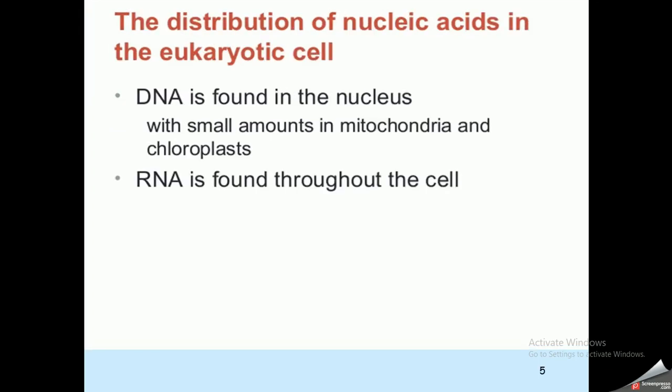Usually nucleic acids are distributed in the eukaryotic cell mostly in the nucleus, with small amounts in the mitochondria. Most DNA is found in the nucleus, with some small amounts of nucleic acid in mitochondria. RNA is found everywhere—it can be in the nucleus or in the cytoplasm.